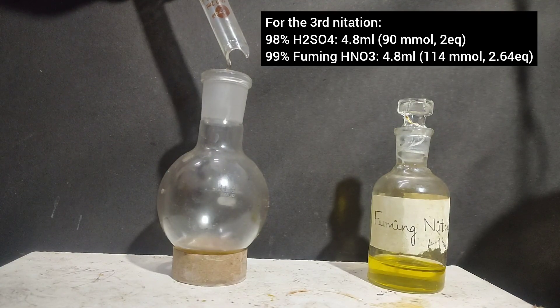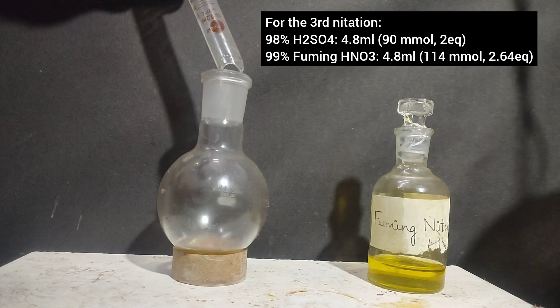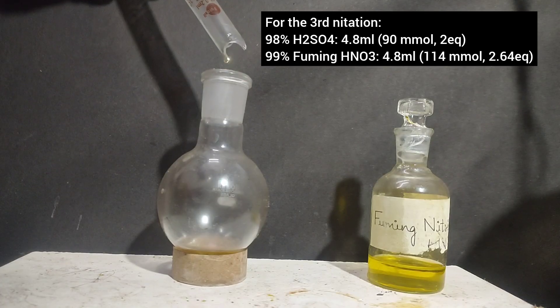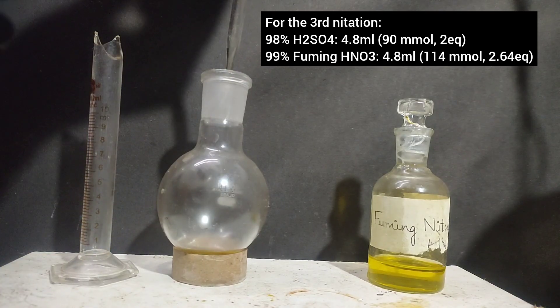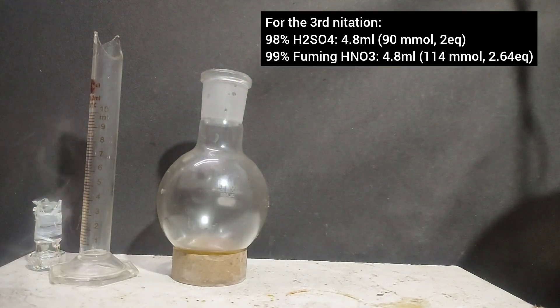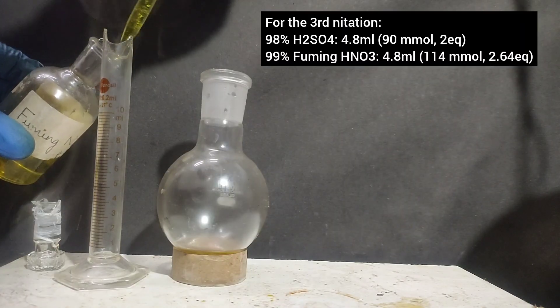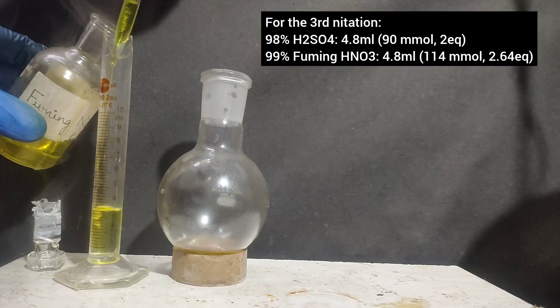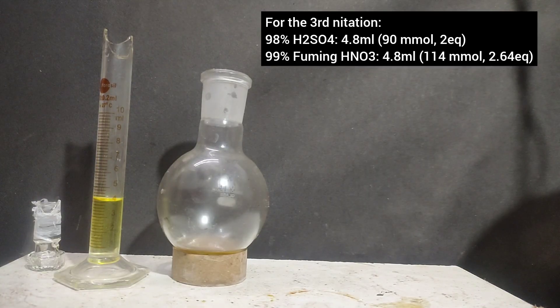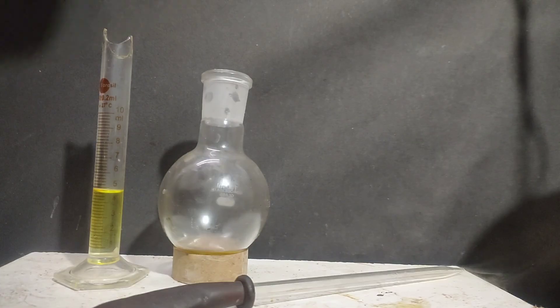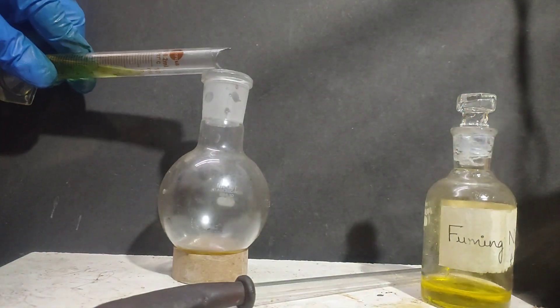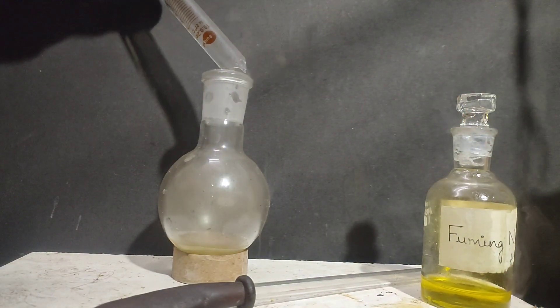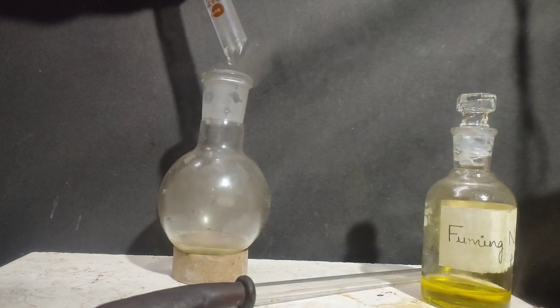Therefore I didn't bother to weigh the impure product and did further calculations according to 4 ml toluene from which I started. Now for the third nitration, I took 4.8 ml of 98% concentrated sulfuric acid and 4.8 ml of 99% fuming nitric acid. Both are in excess as the third nitration is not spontaneous. The presence of two nitro groups deactivates the ring, and to force the third nitro group on, it needs almost anhydrous conditions and an excess of acids.